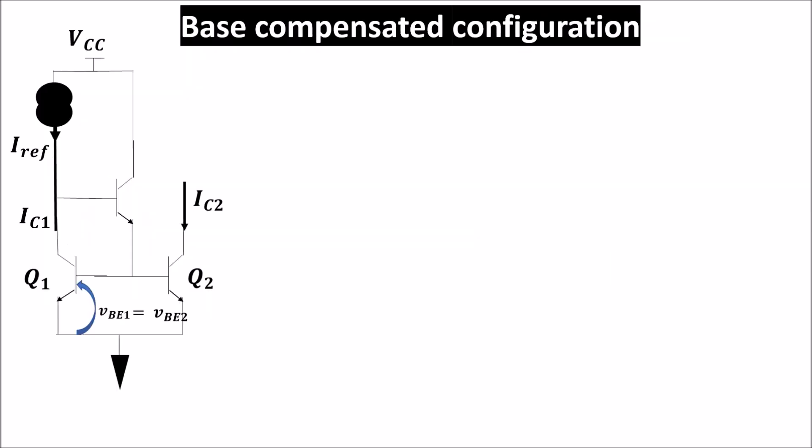Now we see another configuration which is called base compensated, because we add a third BJT on the basic mirror configuration to provide the base currents. In this way, we can better multiply the mirror currents without worsening too much the current transfer ratio. Let's see why.